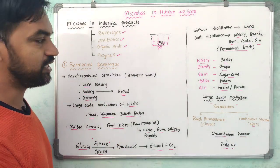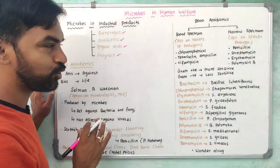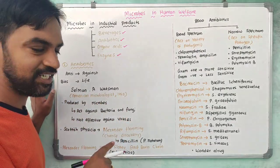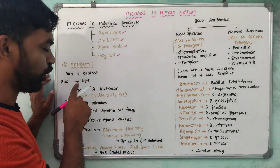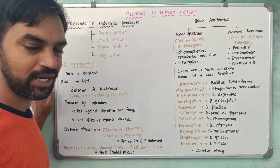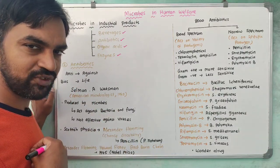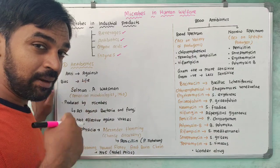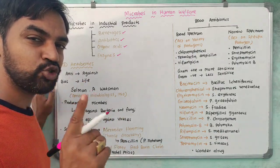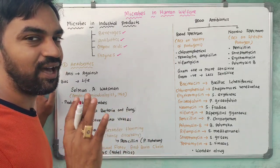Yeast is very helpful in fermented beverages. Next, in microbes in industrial products, we will see antibiotics. 'Anti' means against and 'bios' means life. Antibiotics are used to selectively destroy pathogens.